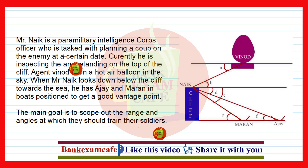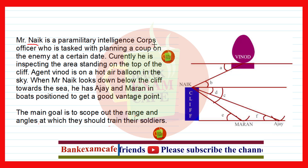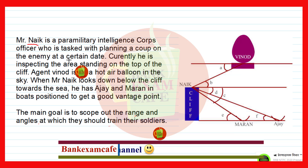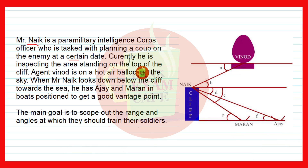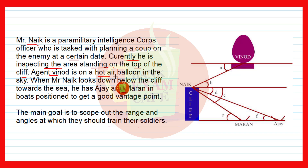Here is a question on the screen. Mr. Nike is a paramilitary intelligence corps officer who is tasked with planning a coup on the enemy at a certain date. Currently he is inspecting the area, standing on the top of a cliff. Agent Vinod is on the hot air balloon in the sky.